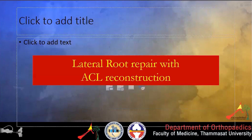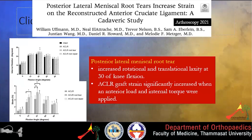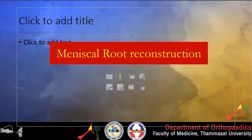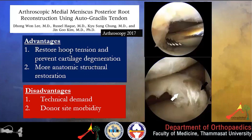How about lateral root repair with ACL reconstruction? As shown previously, posterior lateral meniscus root tear significantly increases strain on the reconstructed ACL graft, so we recommend that the posterior lateral meniscus root be repaired when the ACL is reconstructed. A meta-analysis in 2021 showed that patients with lateral meniscus root tear associated with ACL injury achieved favorable functional outcomes after ACL reconstruction combined with lateral meniscus root repair. A second-look arthroscopy showed that side-to-side repair for radial tear of the lateral meniscus posterior root has a healing rate of more than 90%.